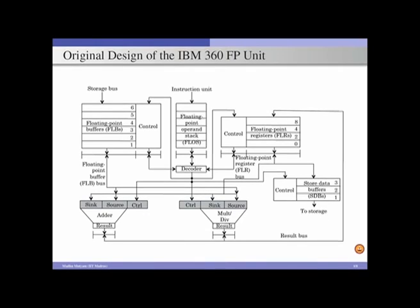The original design of IBM 360 floating point unit consists of two floating point units: one is a floating point adder, and the other is a floating point multiplier and div unit. It also consists of a set of register files: FLB (floating point buffers), FLR (floating point registers), and SDB (store data buffers).